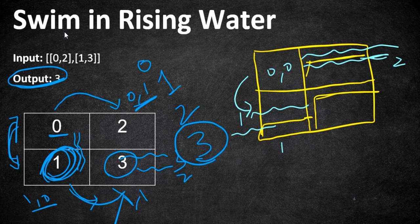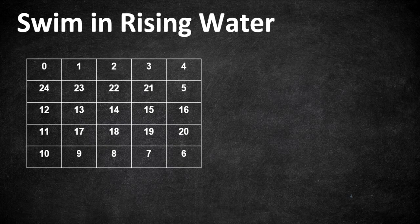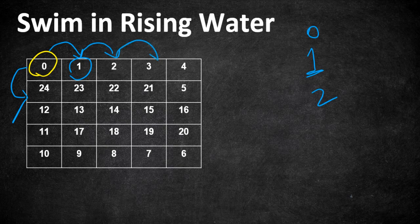To understand better, let's look at the second example from the problem statement. Starting from cell (0,0), you can travel to a cell with elevation 1 or a cell with elevation 24. At time 0 you cannot swim anywhere. At time 1 you can swim to the cell with elevation 1. Continuing the path, at times 2, 3, 4, and 5 you travel through successive neighboring cells. From time 5 you have two options: travel to elevation 21 or elevation 16. To reach 21 you wait until the 21st time unit; to reach 16 you only wait until the 16th.